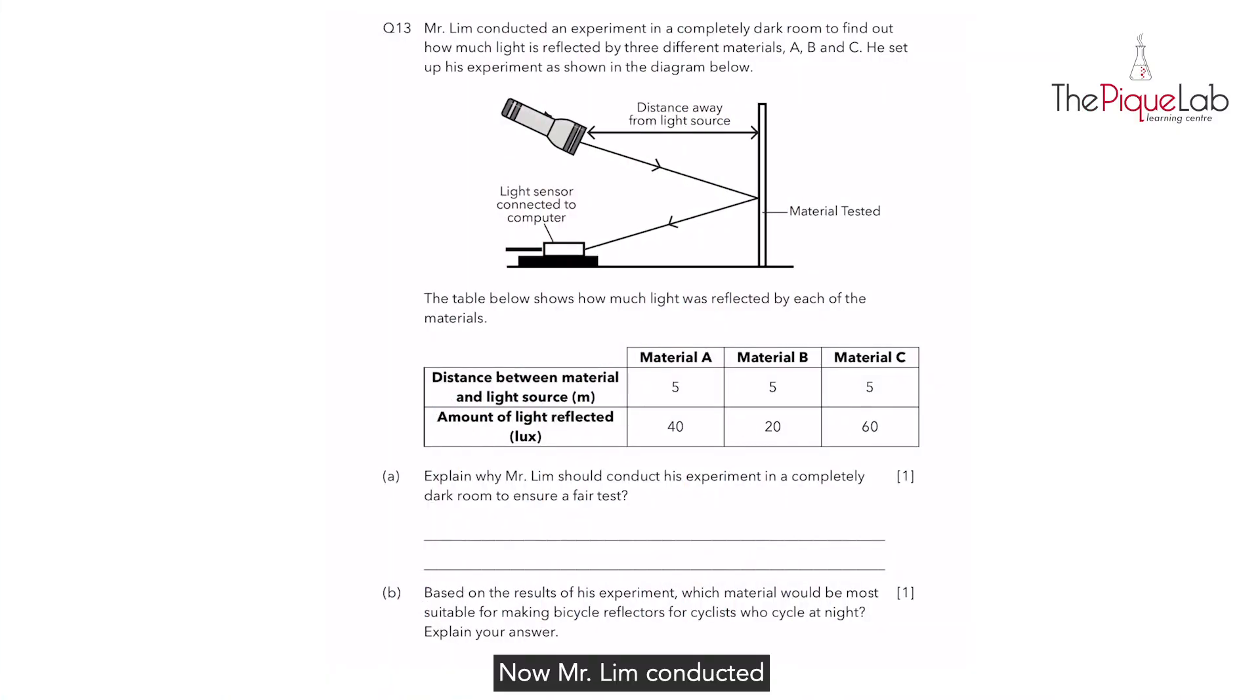Mr. Lim conducted an experiment in a completely dark room to find out how much light is reflected by three different materials A, B and C. He set up his experiment as shown in the diagram below. Let us dissect this diagram. There is a light source which is the torch, and light from the torch, as drawn by the light rays, reaches the material being tested and then it is reflected into the light sensor.